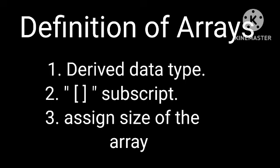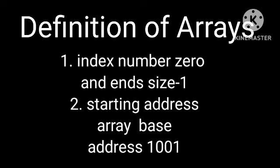An array is a derived data type, with the array name followed by a single subscript. In this subscript, we assign the size of the array. The array index starts with 0 and ends with size minus 1.